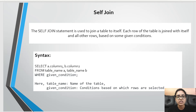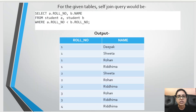The last type of join is the self join. The self join statement, as the name suggests, is used to join a table to itself. Each row of the table is joined with itself as well as all the other rows based on some given conditions. The syntax is: SELECT A.column1, B.column2 FROM table_name A, table_name B WHERE given_condition. For the given tables, the self join query is: SELECT A.roll_number, B.name FROM student A, student B WHERE A.roll_number < B.roll_number. The output shows the set of roll numbers and names based on the given condition.